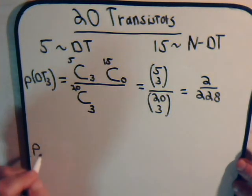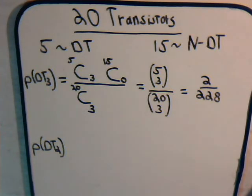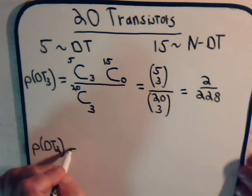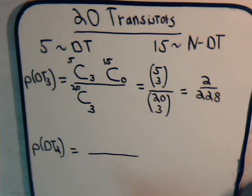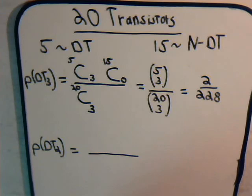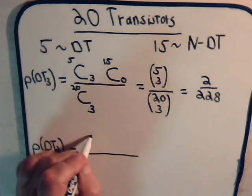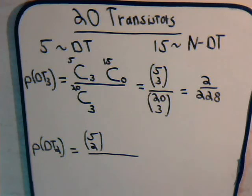Now what about the probability that exactly two of the selected three transistors are defective? That would be the number of ways we can select two defective transistors and one non-defective transistor, divided by the total number of ways we can select three transistors. There are five defective ones, so out of the five we're selecting two — order doesn't matter.